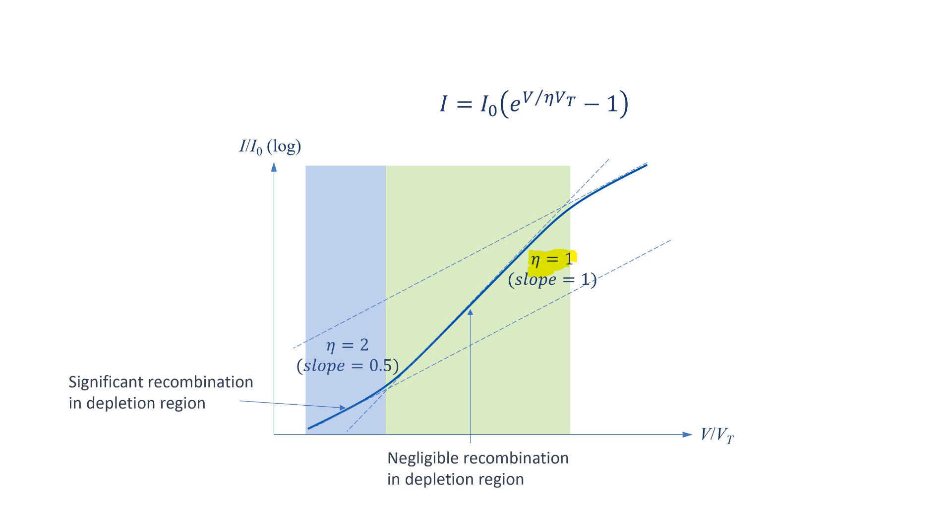At small currents, the slope is 0.5 corresponding to eta equal to 2 due to effect of recombination in the depletion region. At very high currents, the slope is 0.5 again, or eta equal to 2 because of high carrier injection.